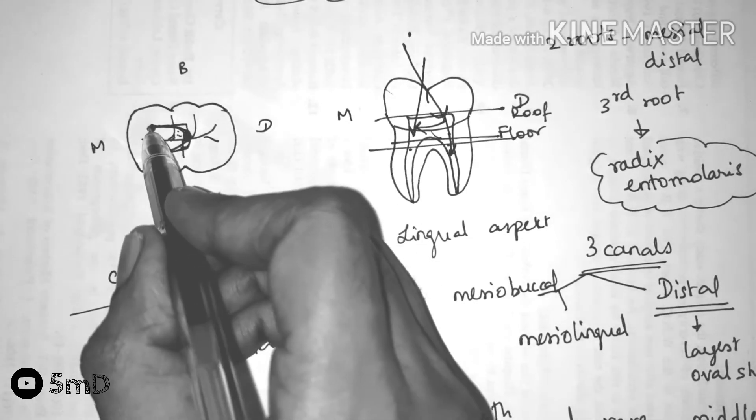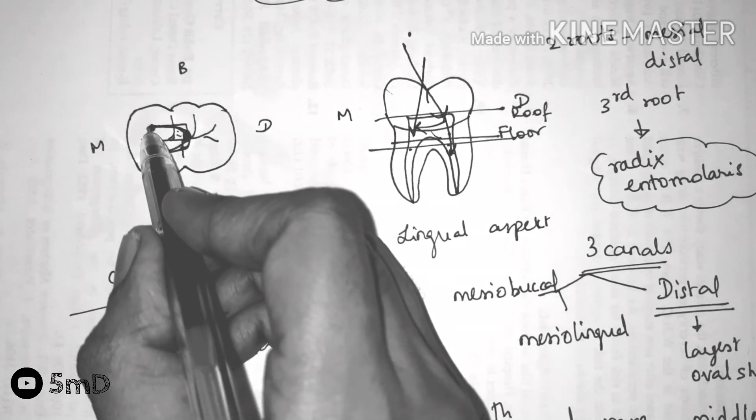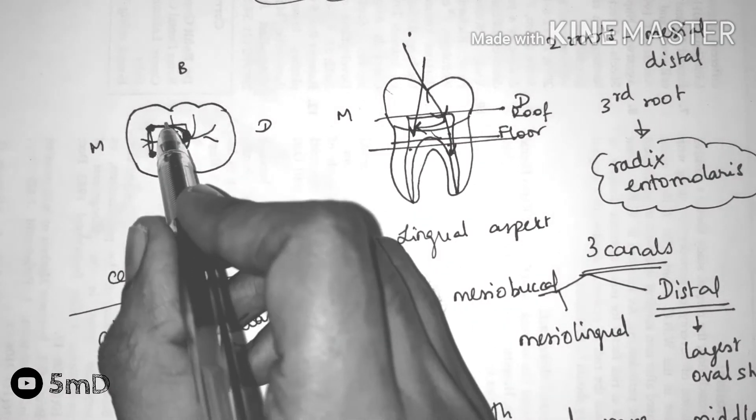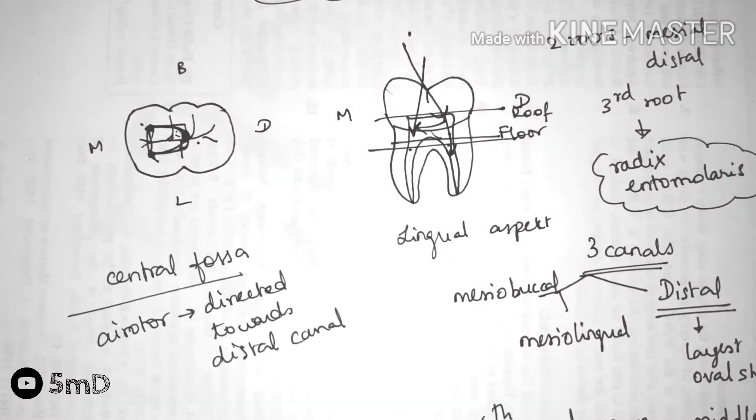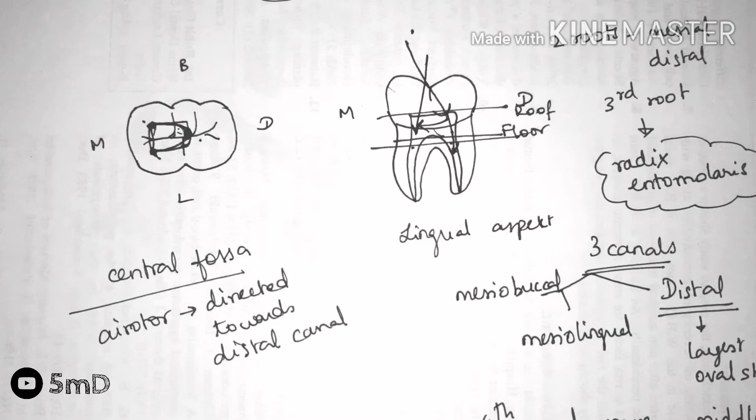From there, move towards the mesiobuccal canal. Then you could move towards the mesiolingual canal. Distal canal is larger and oval shaped compared to the other two canals.